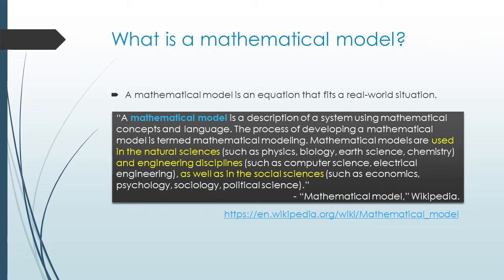Mathematical models are used in the natural sciences such as physics, biology, earth science, chemistry, and engineering, as well as in the social sciences such as economics, psychology, sociology, and political science. A lot of people ask why they're learning this — mathematical models are used in far more disciplines than you may think, which is why we cover this material.